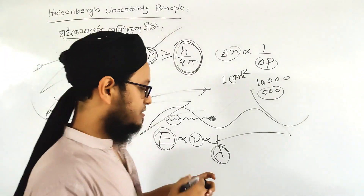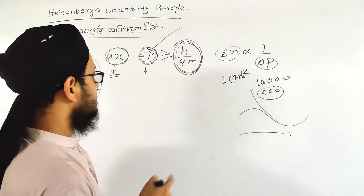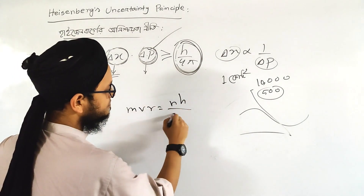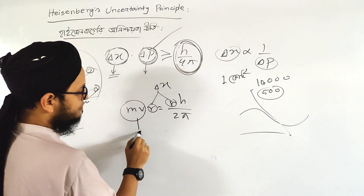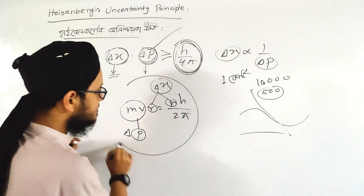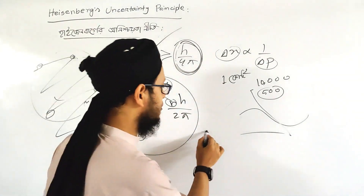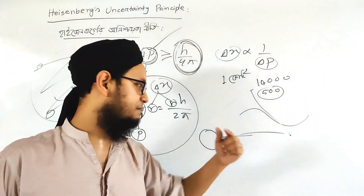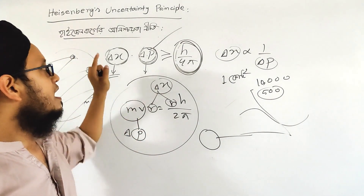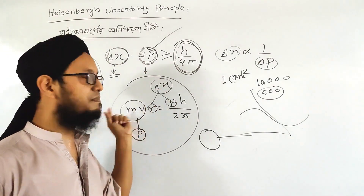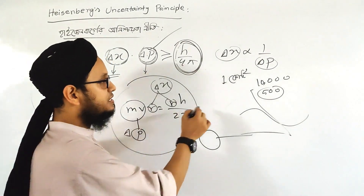This is the Bohr model. I am going to look at the Bohr model — that is what the Bohr model is. The board is the same, and the electron, which is the particle, is like a ball. It has the same properties, so the Bohr model applies.